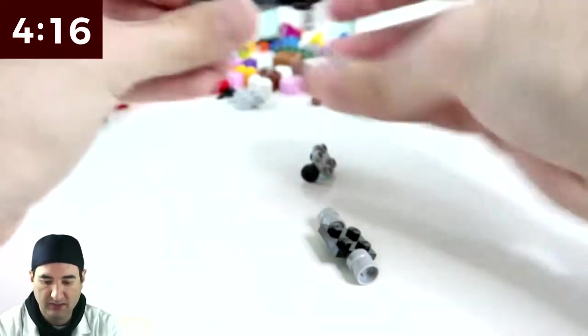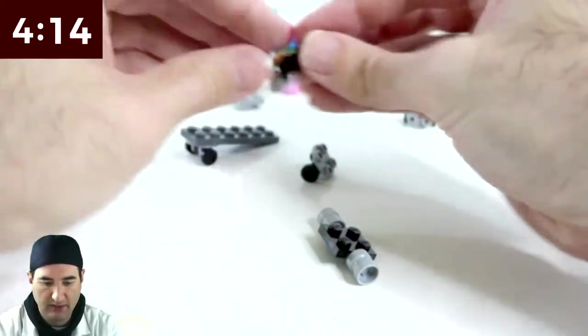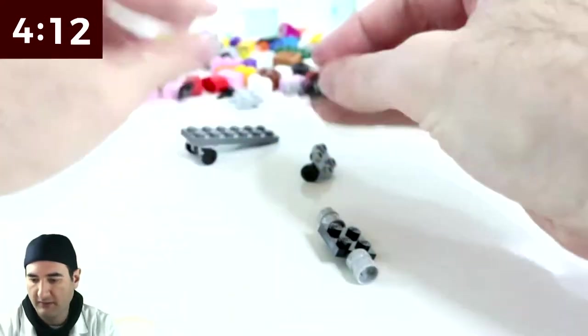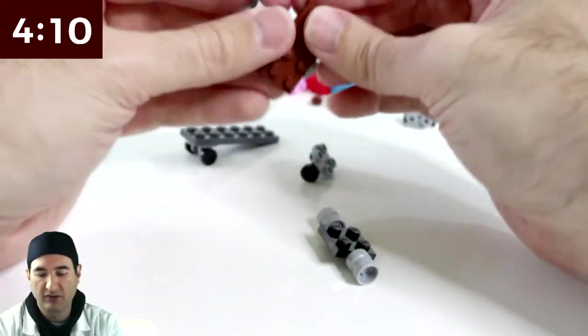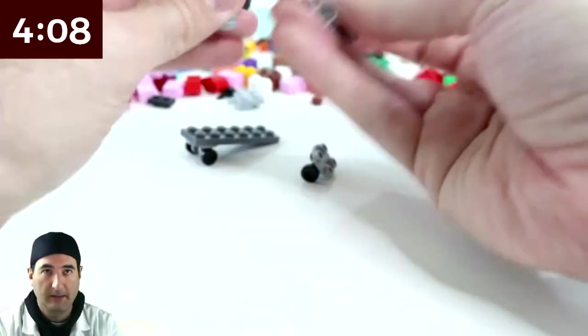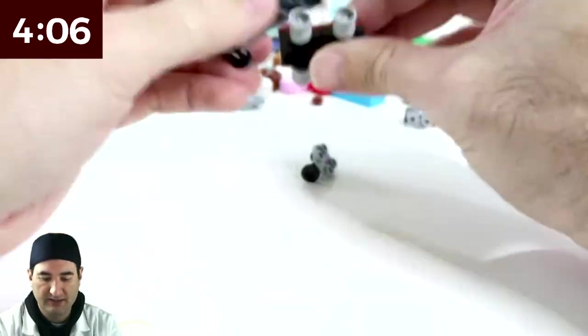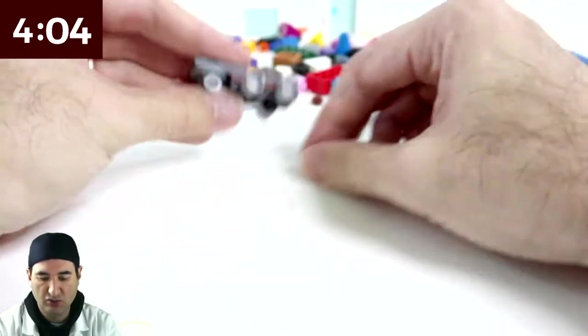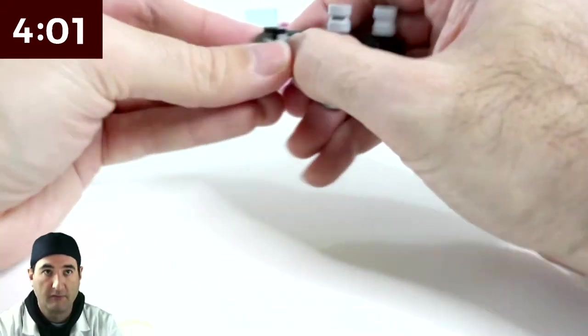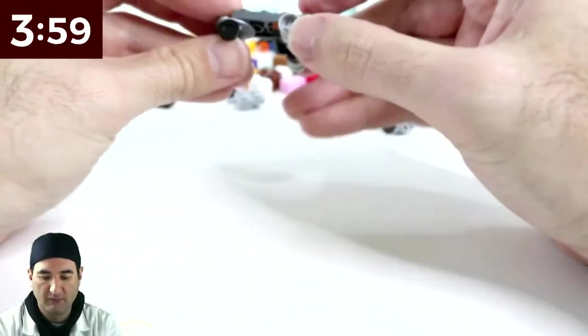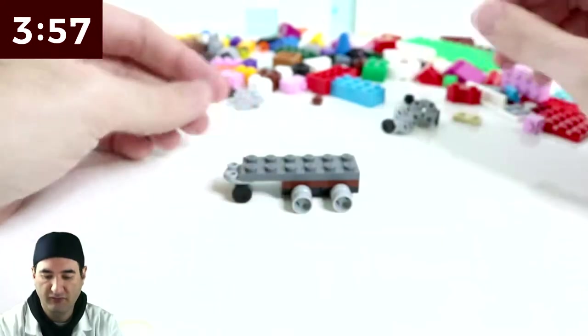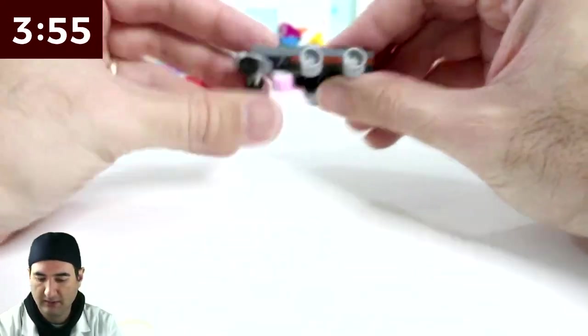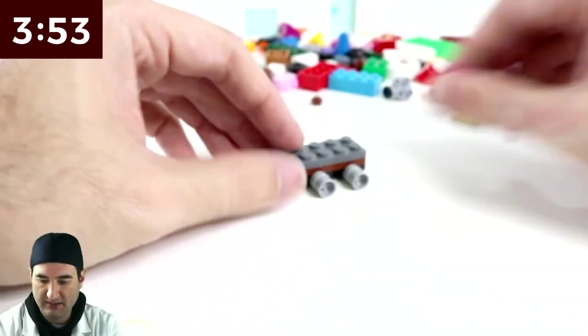Or maybe it's gonna be two big wheels and one little wheel in front. So if you know trains, I think it's gonna be a two, four train. That's what it would be. Something like that. That's not too bad.